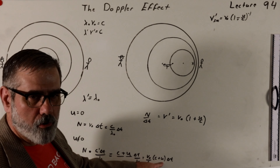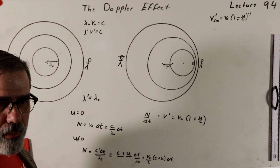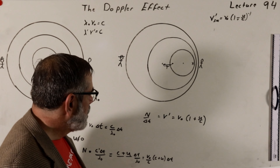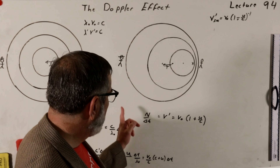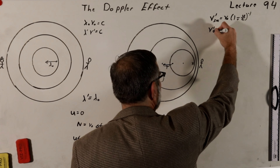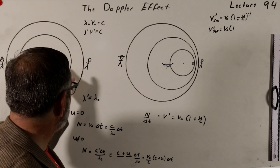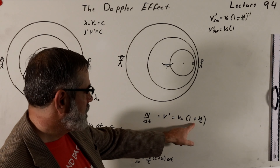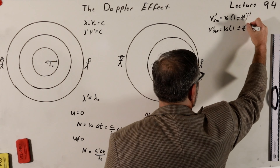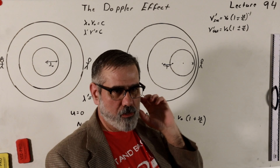N divided by delta T is just the observed frequency — for example, two waves over two seconds gives one hertz. So nu prime observer equals nu nought times (1 plus or minus u over c), where plus is for approaching and minus is for receding. Before, for the moving source, it was 1 over (1 minus u over c) — now for the moving observer it's just times (1 plus u over c). That's a different formula.